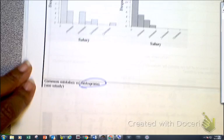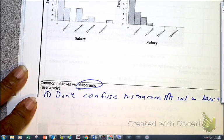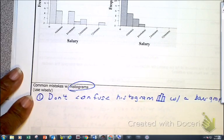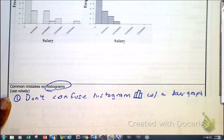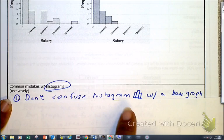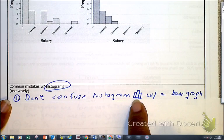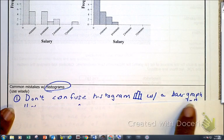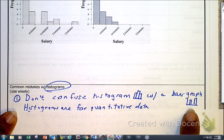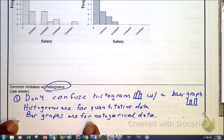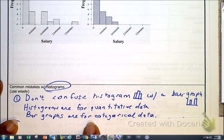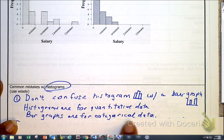Which takes me to my page 11, common mistakes when we are looking at histograms. Okay? First of all, don't confuse a histogram with a bar graph. As you can see, a histogram, like I said, the bars connect. And more specifically, this is for quantitative data, whereas a bar graph, the bars do not connect. But in terms of statistically speaking, what does that mean? Bar graphs are for categorical data.